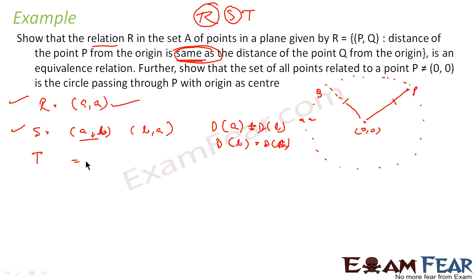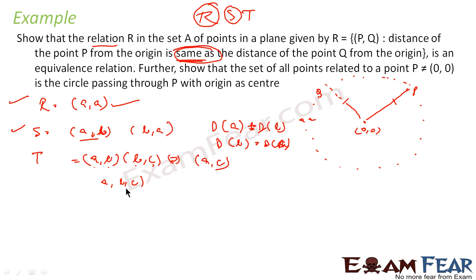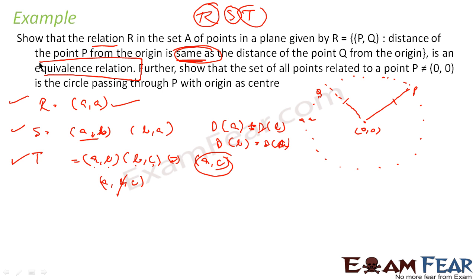For transitive, I have to show that if (A, B) is a member and (B, C) is a member, this should imply (A, C) is a member of the relation. When A and B are equidistant from center, and B and C are equidistant from center, that means A, B, and C are all equidistant from center. That means A and C are equidistant from center, so (A, C) is a member of this set. Transitive also holds true. Since all three hold true, it is an equivalence relation.